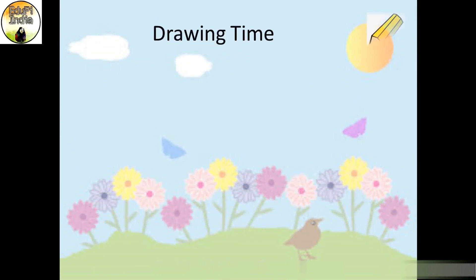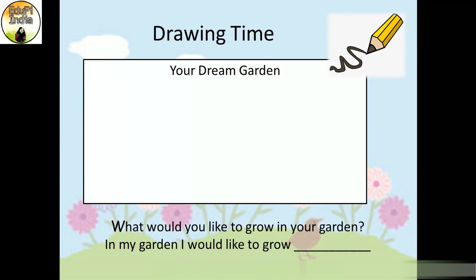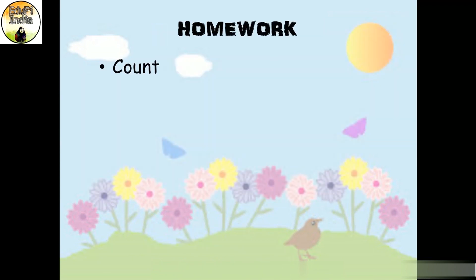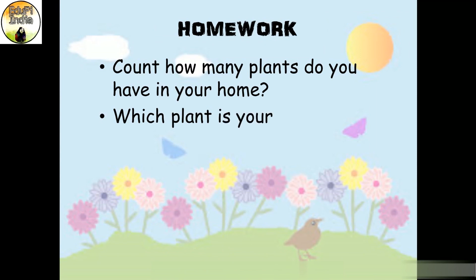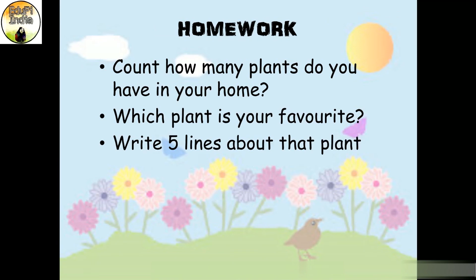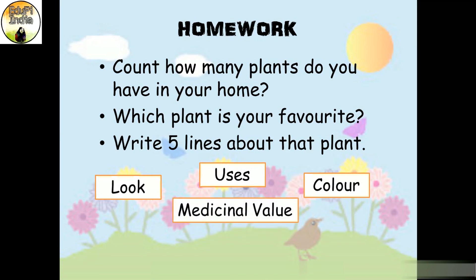Now it's drawing time. Your homework is to draw your dream garden and color it beautifully. You also have to write what you would like to grow in your garden — write five lines using sentences like 'In my garden I would like to grow...' Another homework: count how many plants you have at home, choose your favorite, and write five lines about that plant — how it looks, its uses, its color, its flower color, any medicinal value, and how you care for it. You can also draw a picture of that plant in your copy.